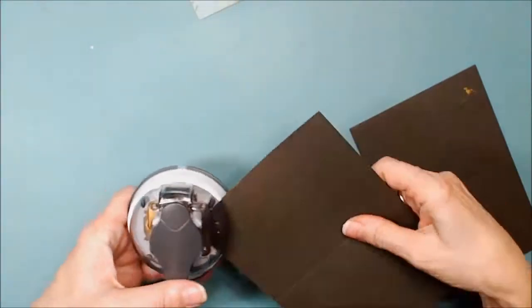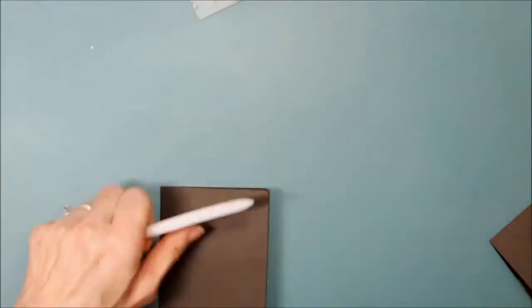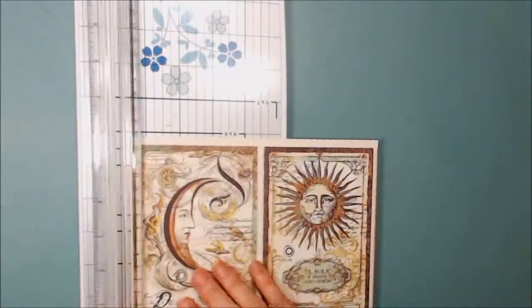So now we'll make some signatures to go inside of our mini. Signatures are the little booklets that go inside. So I've cut three sheets of cardstock to 6 and a half inches wide by 5 inches, and I'm scoring and folding in half at the 3 and a quarter inch mark.